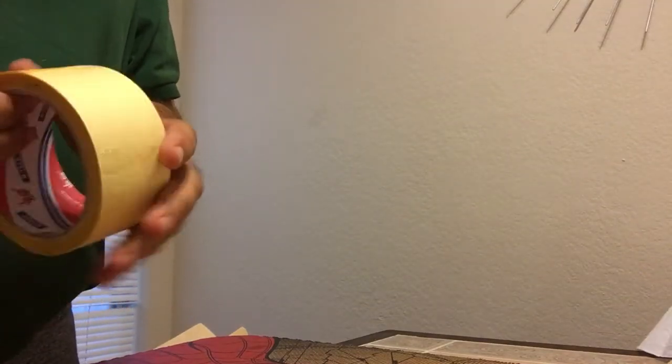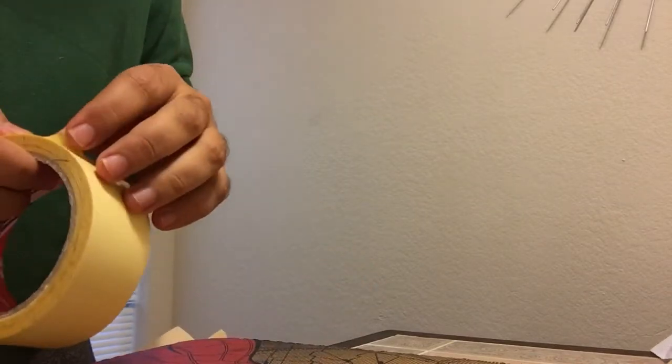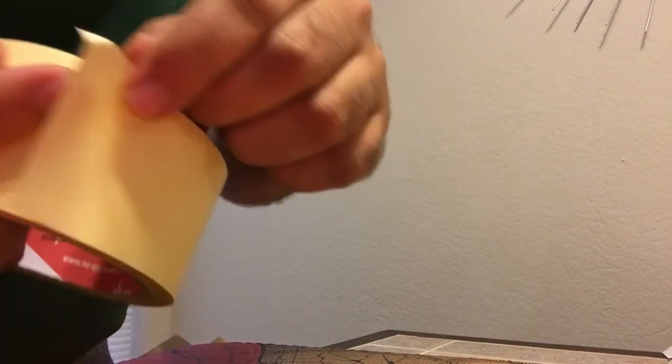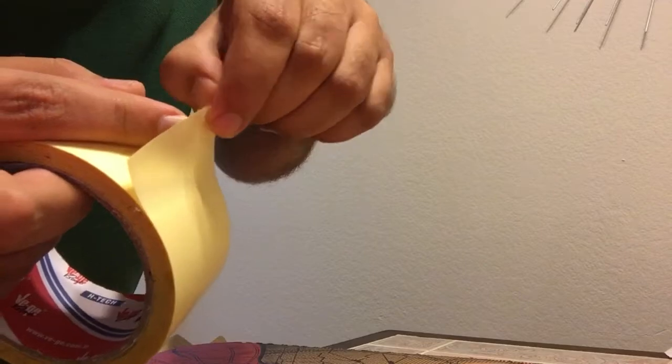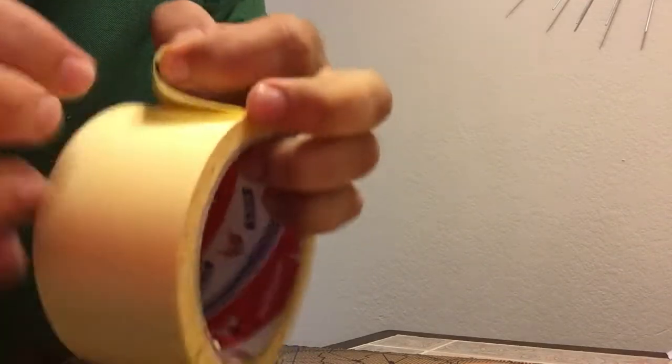I'm going to show you how to peel double-sided film tape with a couple of tricks. First, you need to bend the corner a little bit like this.